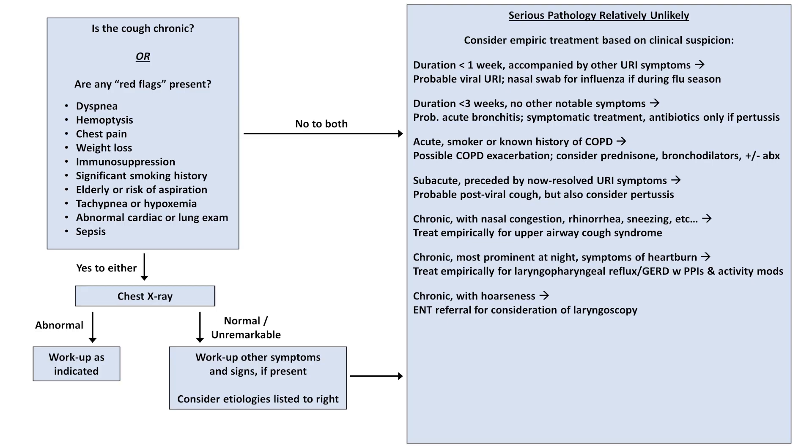If the cough is chronic, non-productive, is triggered by exercise or cold temperature, and is associated with wheezing, treat empirically for cough-variant asthma with albuterol and steroid inhalers.